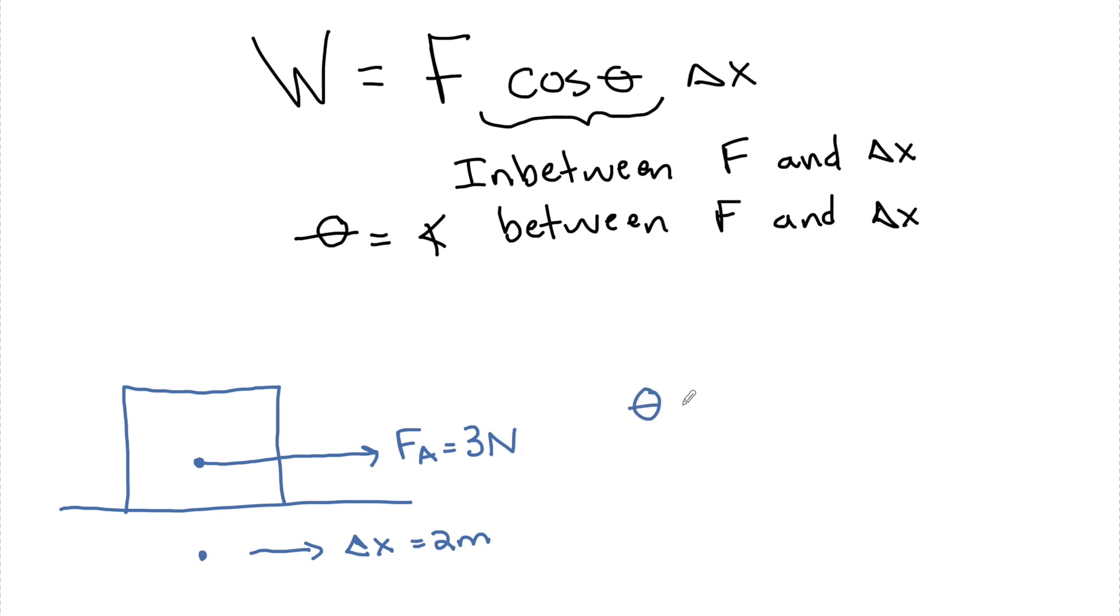We see that there is no angle between the displacement and the applied force. Theta, in this case, is equal to 0 degrees. And the cosine of 0 degrees, guys, is 1. So when you're on a horizontal surface and the force is in the same exact direction as the displacement, that's when we can write this as just work equals FX.